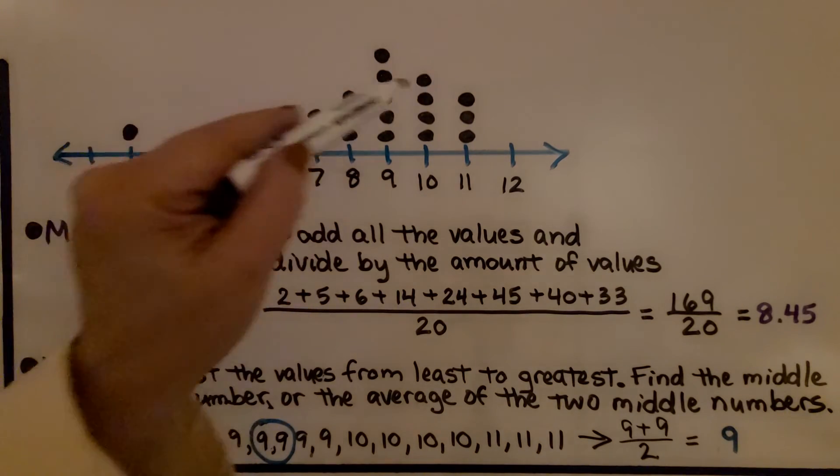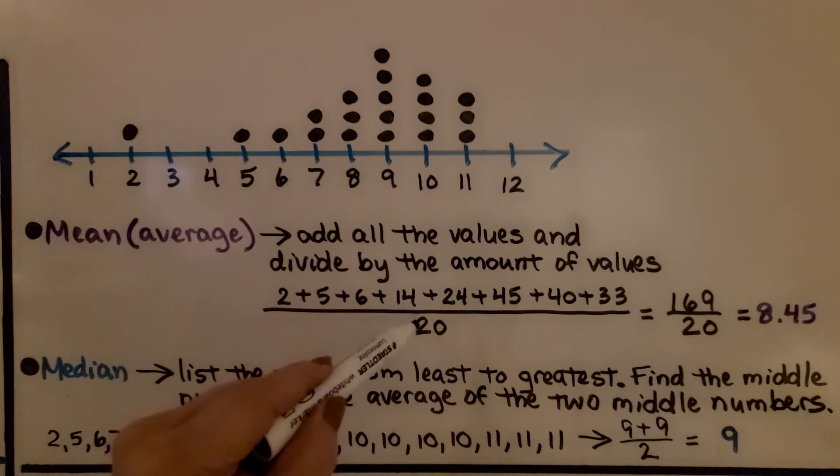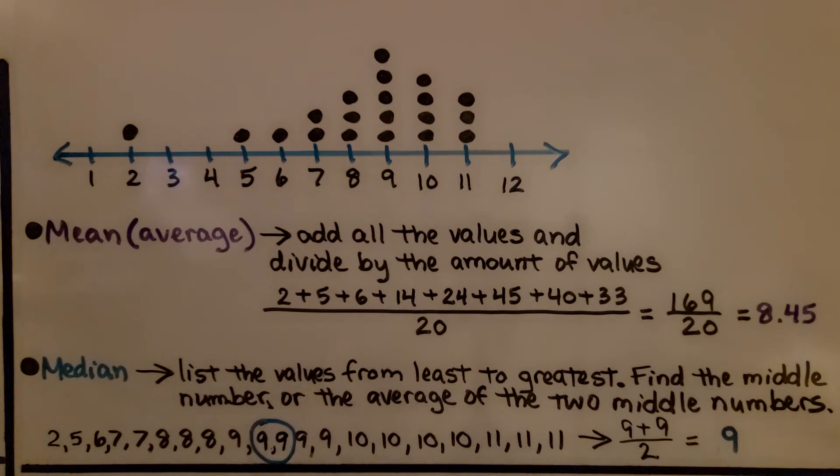There are 20 dots, which means there's 20 data values. So we're going to divide by 20, and we get 8 and 45 hundredths.